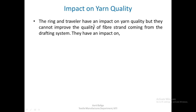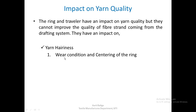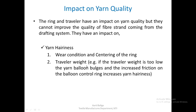The ring and traveler have an impact on yarn quality but cannot improve the quality of the fiber strand coming from the drafting system — they can affect it negatively but cannot undo existing defects. The first impact is yarn hairiness. If traveler weight is too low, the yarn balloon bulges and increased friction on the balloon control ring increases hairiness. One must go for a heavier traveler weight to reduce balloon size and therefore reduce friction along the balloon control ring.